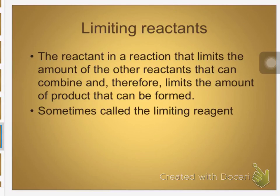We are really going to just talk about this conceptually today. We're going to talk about what are called limiting and excess reactants, and these are some of the things that can limit the amount of product you produce. Has anybody here ever baked cookies? So if you're baking cookies and your recipe calls for three eggs and you only have two eggs in the house, are you going to make a full batch of cookies? No — you're going to have to cut your recipe back. That means the eggs were your limiting reactant. They limited how many cookies you could make.